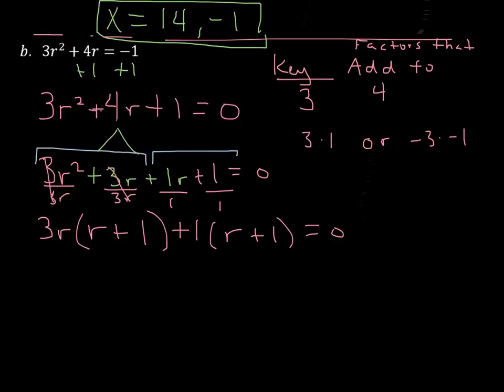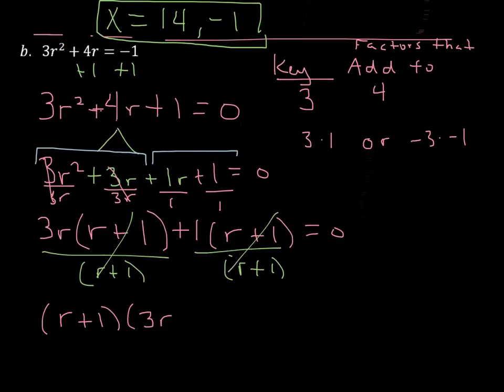And now we can see that each of these terms have an r plus 1 in it. So we are going to write the r plus 1 out front. And then I'm going to open the parentheses. That's like dividing this term by r plus 1. That's like dividing this term by r plus 1. These cancel out, and we're going to be left with 3r. And then these cancel out as well, and we're going to be left with a plus 1. And we still have the equals 0.